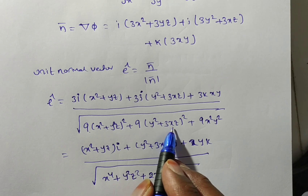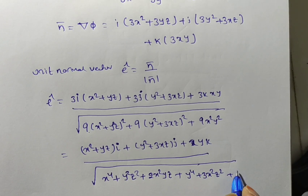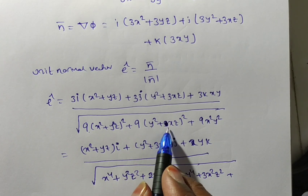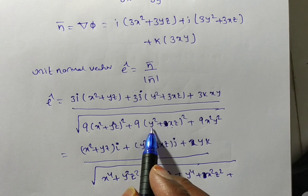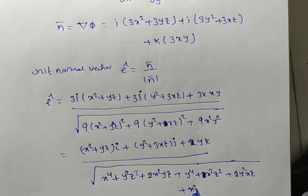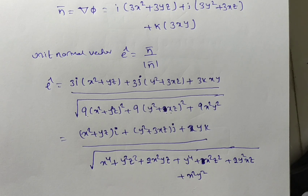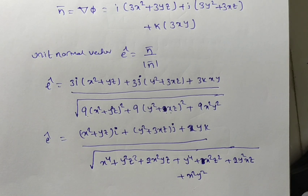Note that in this problem no specific point was given. Generally they give a point P(x₁, y₁, z₁), and we substitute to get constant values. Even without a point, the solution is valid in general form — though it looks lengthy. Thank you for watching this video. If you have not subscribed to my channel, please subscribe and share it too.